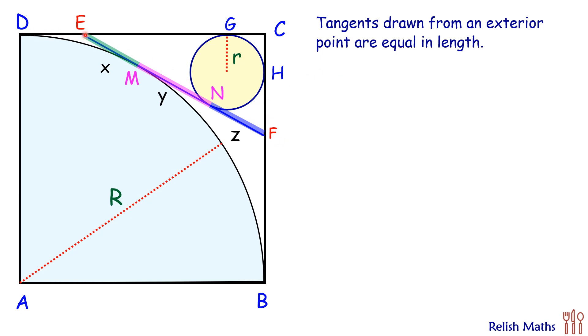So if we see here from point E, exterior to this blue circle, two tangents are drawn: DE and EM. So the length of DE will be nothing but x. Same way from point E again we are drawing two tangents EG and EN, so the length of EG will be nothing but x plus y.